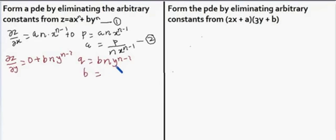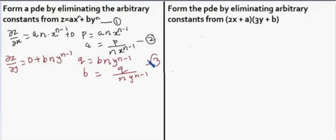From this, we can find a substitution for b, which is equal to q divided by n·y^(n-1). Let this be equation number 3.